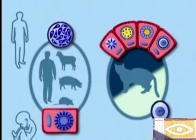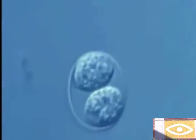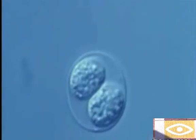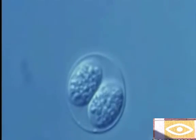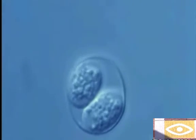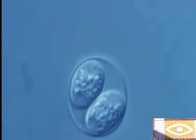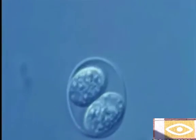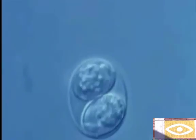Oocysts are excreted unsporulated, meaning they contain a single cell or zygote. The thick oocyst wall protects them against external influences and is extremely resistant to disinfection. It can persist infectiously for several months. Inside the oocyst wall, sporulation takes place. It lasts for about 30 hours and is shown here in time-lapse. With this development phase, the life cycle of Toxoplasma gondii is completed. After oral uptake of these infectious stages, the cycle can begin again.